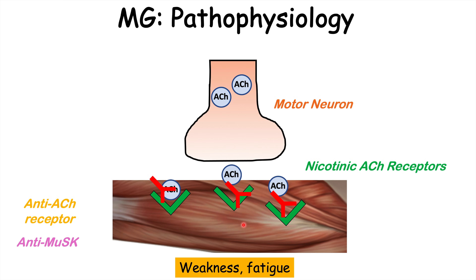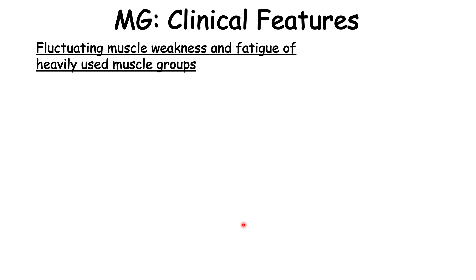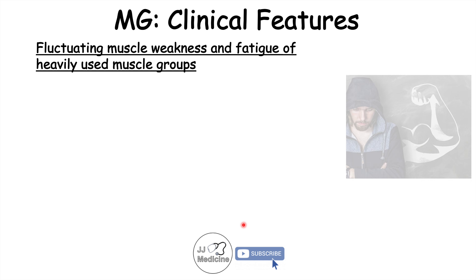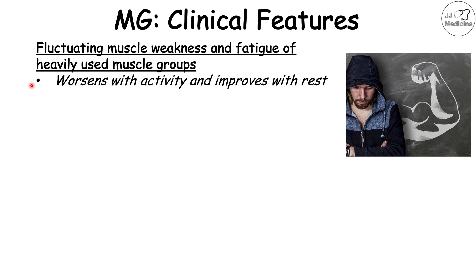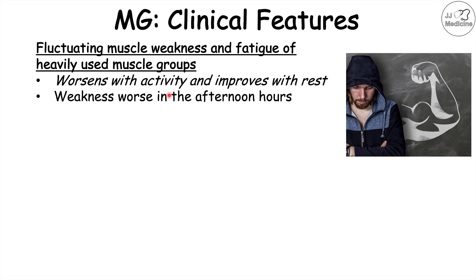This is important when we talk about the signs and symptoms. We can now better understand why we see fluctuating muscle weakness and fatigue of heavily used muscle groups — heavily used because those are the groups that utilize more acetylcholine and deplete the motor neurons. The muscle weakness and fatigue worsen with activity and improve with rest. The weakness gets worse in the afternoon and evening hours and is better in the morning.